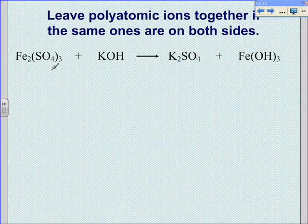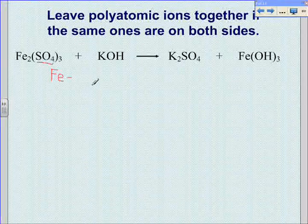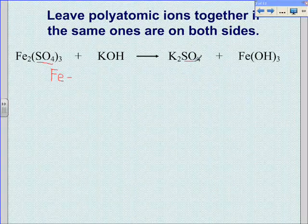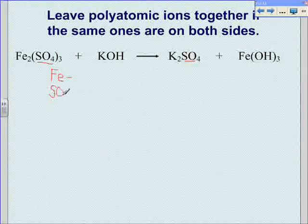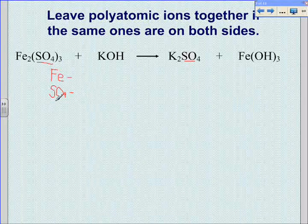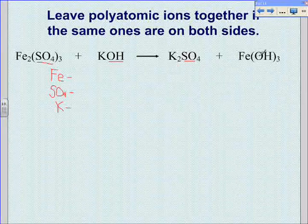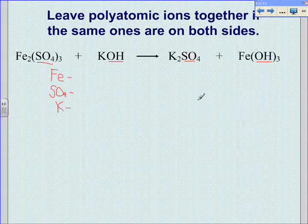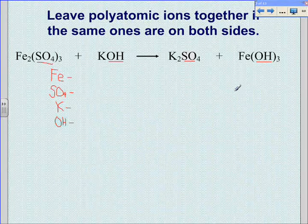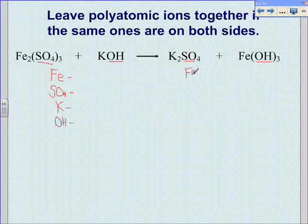In this equation, when we go to list the elements, we start with iron, and then the next thing we have is sulfate, SO4. We can look on the right side and see that we do have sulfate on the right side as well, so we can leave the sulfate together. Remember, the subscripts that go with polyatomic ions are important to leave in the polyatomic ion. Next, we have potassium, and then we have a hydroxide polyatomic ion. If we look on the right side, we see that we also have a hydroxide polyatomic ion there, so we can list OH. We have the same elements and polyatomic ions on the right side, so we list them in the same order as we did on the left.